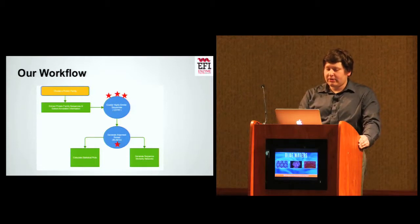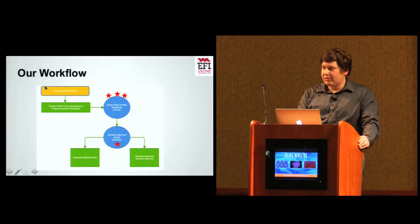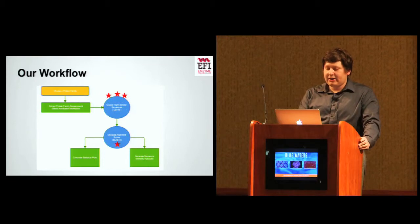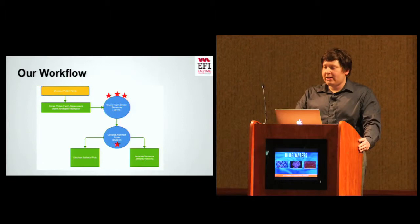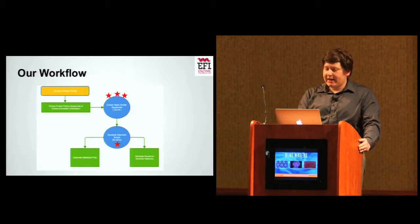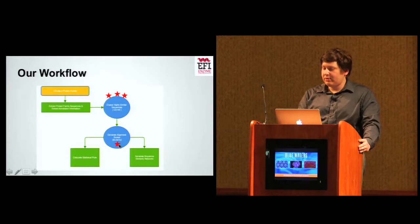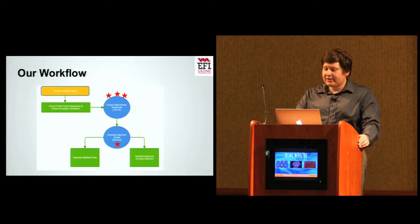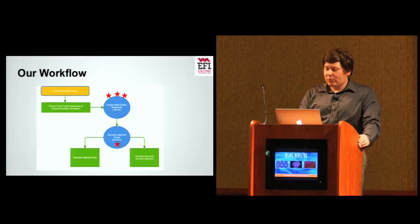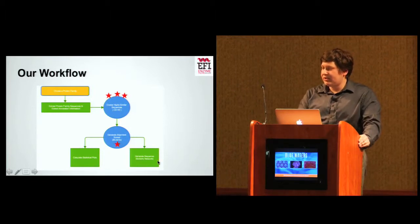What we do is we cluster the sequences before we generate the scores. The way that our workflow works is you choose a protein family, then we extract the protein and family sequence information and annotation information. Then we cluster them using the CD-HIT algorithm. We're able to cluster them at 100% sequence identity over 100% sequence length, or we can use other cutoffs that are less accurate to further reduce the computation time from clustering these sequences. We cluster them and then we're able to generate alignment scores using BLAST. Another way that we can save CPU time is by reusing the BLAST calculations from previous databases so we don't have to keep recalculating the entire database. Once we've generated these alignment scores, we can calculate statistical plots and then actually generate the sequence similarity networks to be distributed to the user.